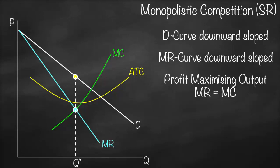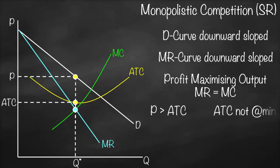From Q*, we go up until we intersect the demand curve, then move horizontally to get our price. To find average total cost at Q*, we go up until we intersect the average total cost curve and move horizontally. As you can see, price is greater than average total cost, and at this point average total cost is not at its minimum, because marginal cost intersects average total cost at minimum.